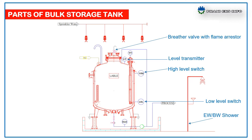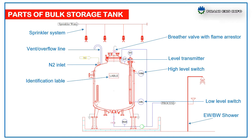Breather Vault with Flame Arrester, Sprinkler System for Emergency Purpose, Vent or Water Flow Line, Inlet Line, Identification Label which represents the material present inside the storage tank, Air Vent, Empty Level Switch, and Bund which is used for primary containment in case of leakage.